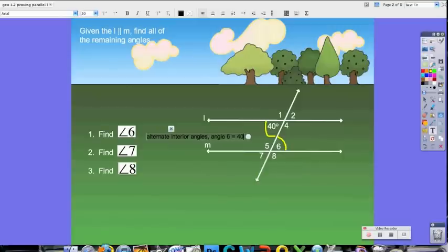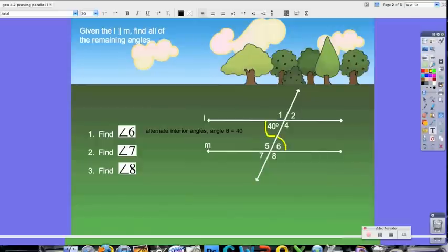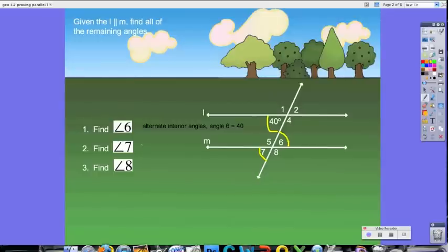So, looking at our angle 40 measure, our 40 degree measure, and angle 7, don't we know that those two angles are corresponding angles?